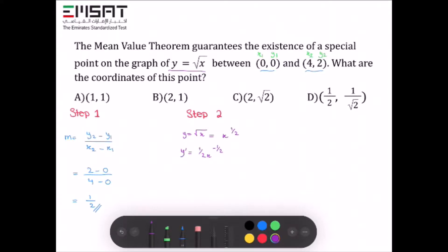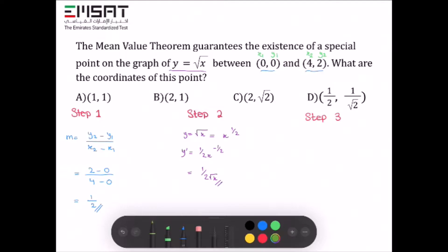Converting to radical form, we end up with y' = 1/(2√x). Step 3: Find the value of x.